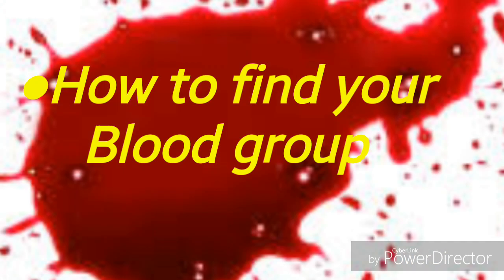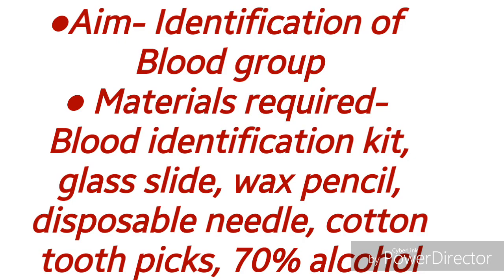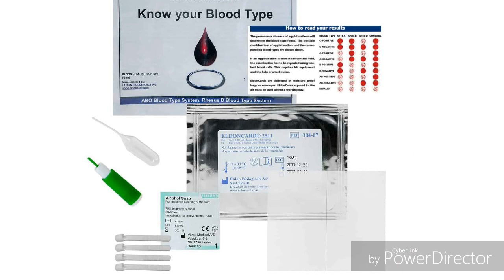Now we will move on to an interesting activity: how to find your blood group. Most people are now aware of their blood group as specialists often refer patients for blood tests. The aim of the experiment is identification of blood group. Materials required are: blood identification kit, glass slide, wax pencil, disposable needle, cotton, toothpicks, and 70% alcohol. Here you can see the picture of the blood identification kit.